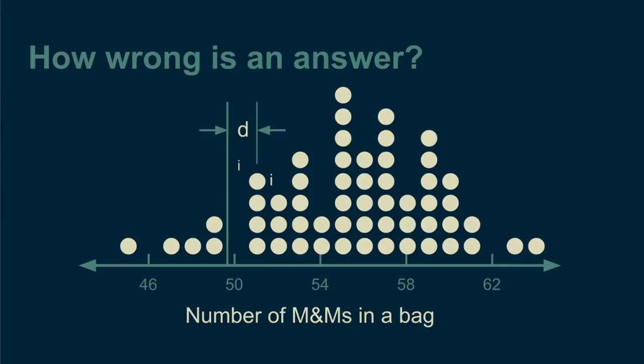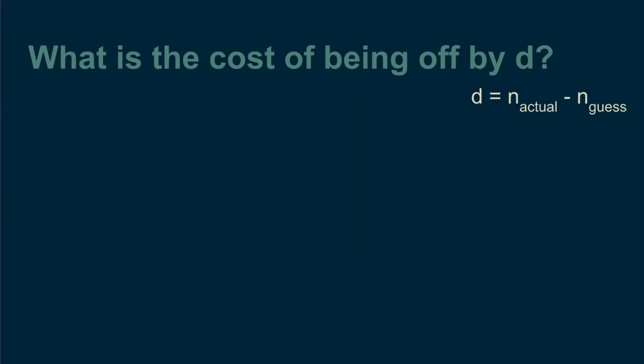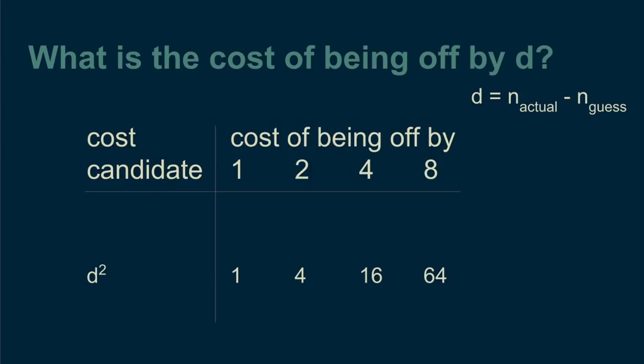There are lots of valid ways to answer this question and they all result in different answers. The most common is to take the deviation and square it. If a bag is twice as far as the estimate from another, it incurs four times the cost. This squared cost function cares more about the points that are way off than the ones that are close to correct.